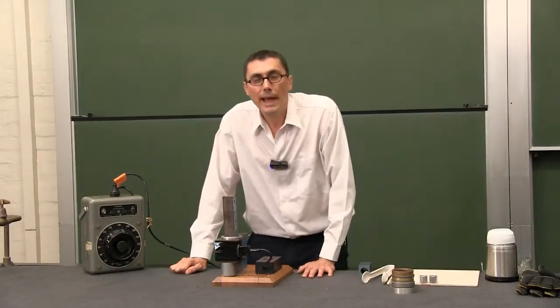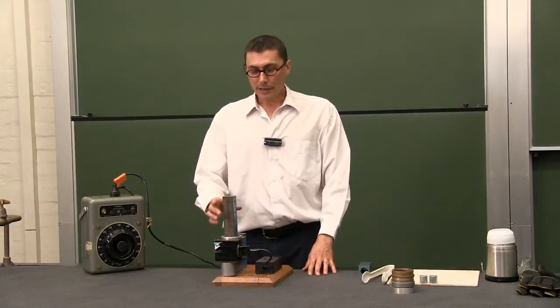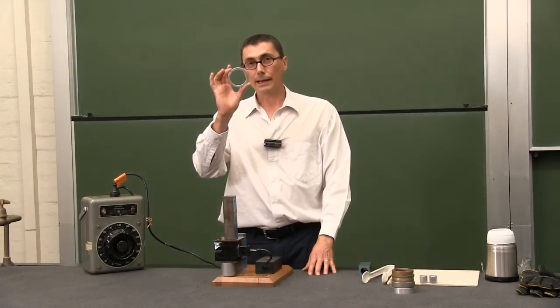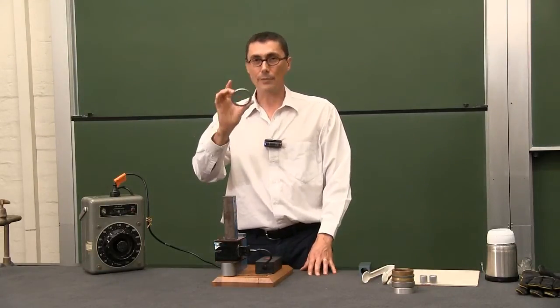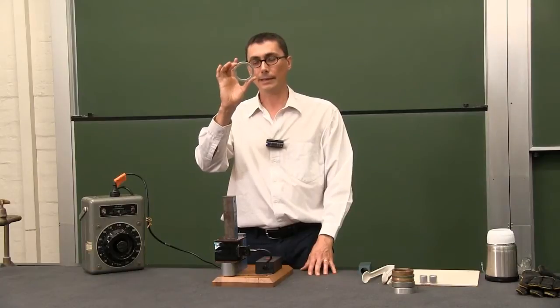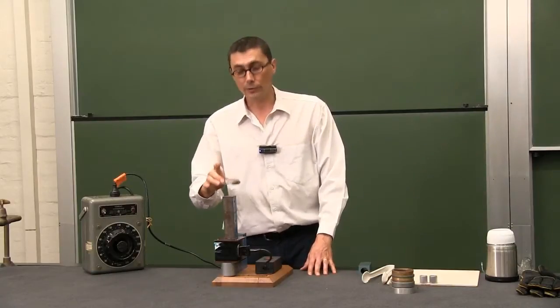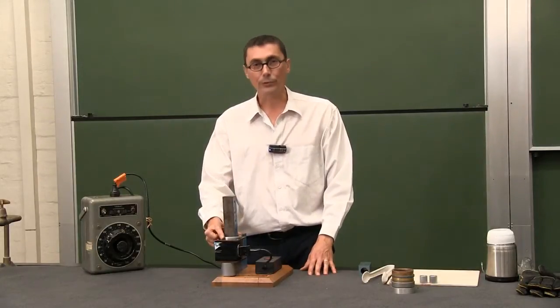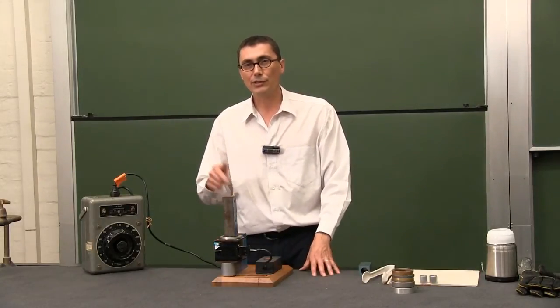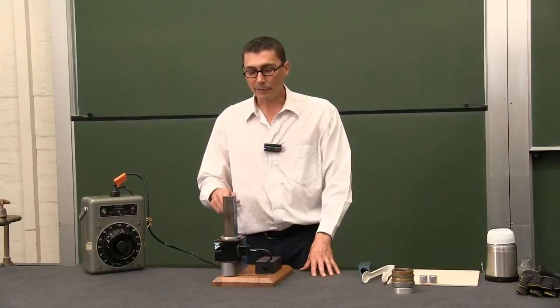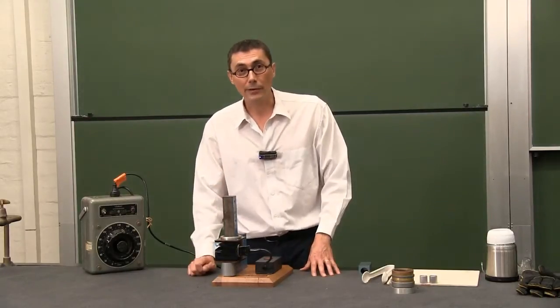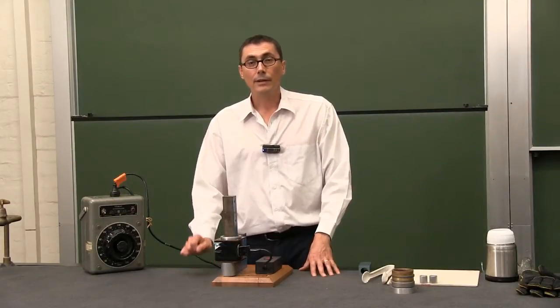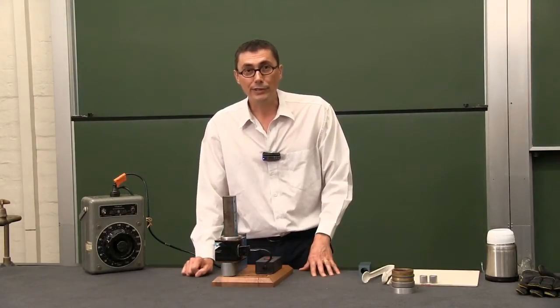Now you should know that whenever there is an increase in the amount of flux through a ring of conductor you will induce a current in that conductor. Now Lenz's law says that the direction of the current that you induce is going to be such that the magnetic field created by that induced current will oppose the change in field that induced it in the first place.